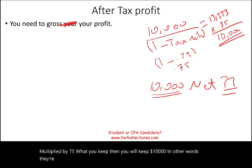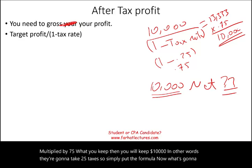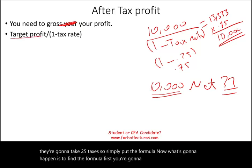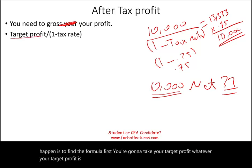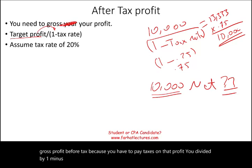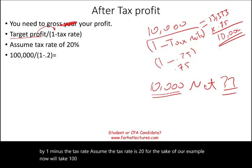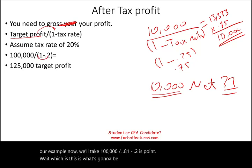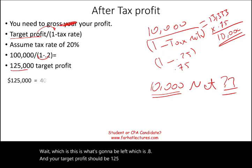So the formula is: take your target profit and gross it up by dividing by 1 minus the tax rate. Assuming a 20% tax rate: $100,000 divided by 0.8 (since 1 − 0.2 = 0.8) equals $125,000. Rather than setting profit at $100,000 in the formula, you now set it at $125,000.